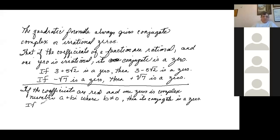In other words, if five i is a zero, then negative five i is also a zero. If you have seven minus four i, then seven plus four i is automatically a zero.